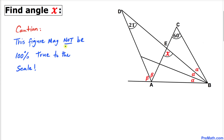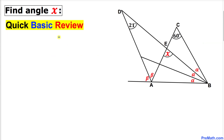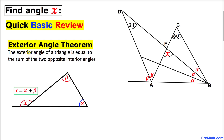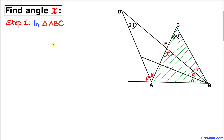Before we proceed, let me make it very clear that this figure may not be 100% true to scale. Let me go over a quick basic review and recall the exterior angle theorem: the exterior angle of a triangle is equal to the sum of two opposite interior angles. As you can see in this diagram, angle x is our exterior angle and that is equal to the sum of the two opposite interior angles alpha and beta, so x equals alpha plus beta.